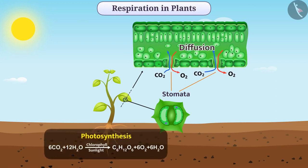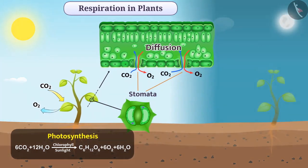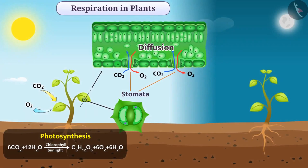Photosynthesis occurs during the day, therefore carbon dioxide produced in the cell during respiration is used in photosynthesis, and oxygen is released from cells during the day. At night, the process of photosynthesis does not occur, so carbon dioxide is released from the cells of the plants.